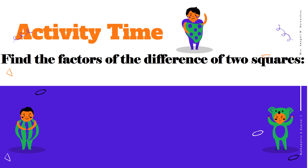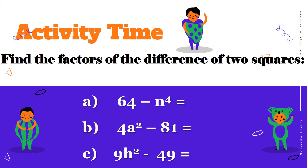Now you must practice. Let's have activity time. Find the factors of the difference of two squares. Get your pens and papers and solve the following: letter A, 64 minus n raised to the 4th; letter B, 4a squared minus 81; and letter C, 9h squared minus 49. Answer it and practice makes perfect.